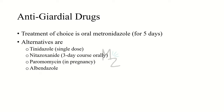Anti-giardial drugs: Giardia lamblia is the most commonly diagnosed intestinal parasite. It has two life cycle stages: the binucleate trophozoite with 4 flagella and the drug-resistant 4-nucleate cyst. The treatment of choice for Giardia lamblia infection is oral metronidazole for 5 days. An alternative is a single dose of tinidazole. Nitazoxanide is given as a 3-day oral course. Paromomycin is given in pregnancy. Albendazole, an anti-helminthic drug, can also be used to treat giardiasis.